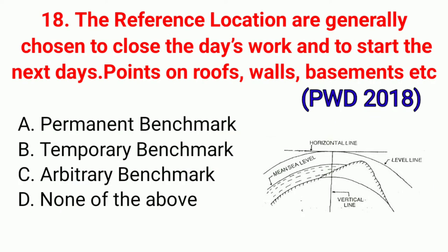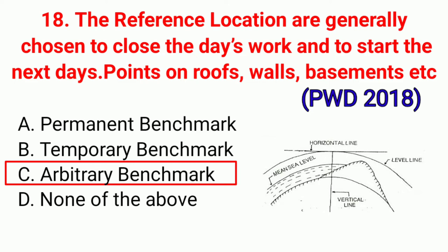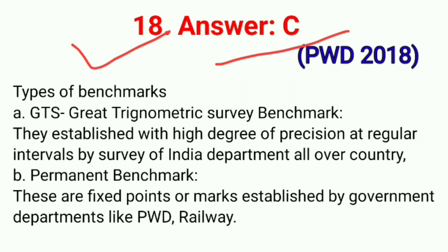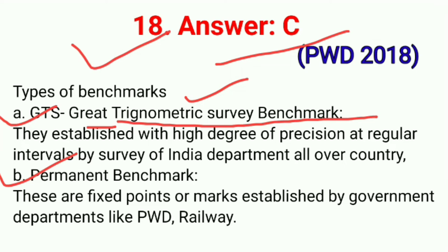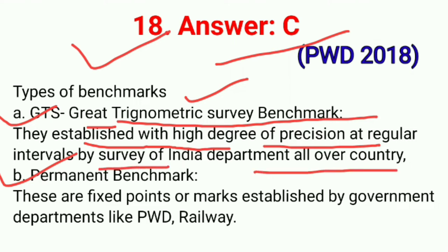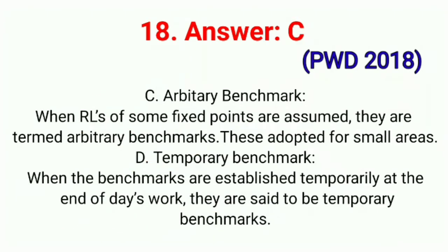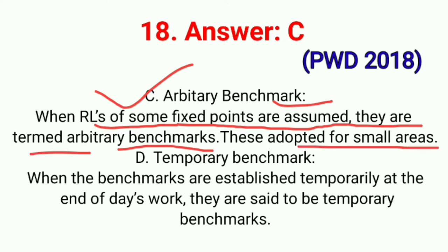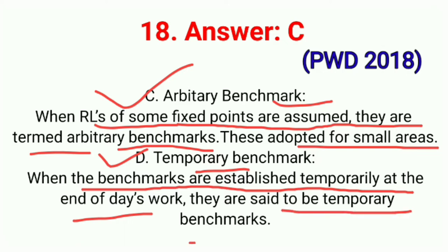Question No. 18. The reference locations generally chosen to close the day's work and to start the next day's work on roofs, walls, basements, etc. are called — correct option C: Arbitrary Benchmark. There are four types of benchmark: first, GTS (Great Trigonometric Survey) benchmark — established with high degree of precision at regular intervals by Survey of India Department all over the country; second, Permanent Benchmark — fixed points or marks established by government departments like PWD, Railway; third, Arbitrary Benchmark — when reduced levels of some fixed points are assumed; fourth, Temporary Benchmark — established temporarily at the end of day's work. Correct option C.